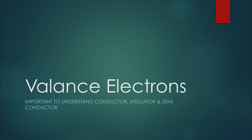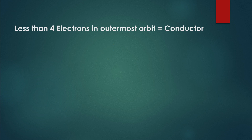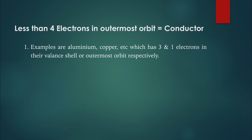Now let's learn about valence electrons — this is important to understand conductors, insulators, and semiconductors. If you look at this figure carefully, you will find that the atom has different orbits shown by dotted lines. The electrons in the last orbit are known as valence electrons. The outermost orbit, also known as the valence shell, can have a maximum of 8 electrons. The number of electrons in the outermost orbit decides the electrical property of the material. If an atom has fewer than 4 electrons in its outermost orbit, the material can be used as a conductor — examples are aluminum and copper, which have 3 and 1 electrons in their valence shell respectively.